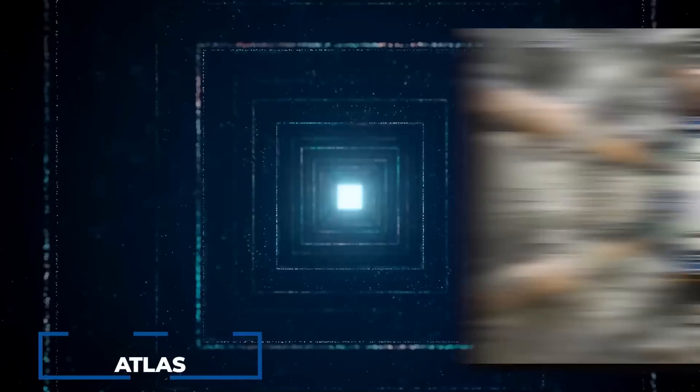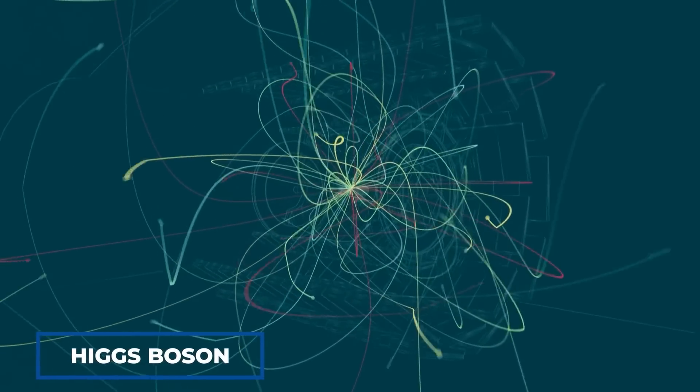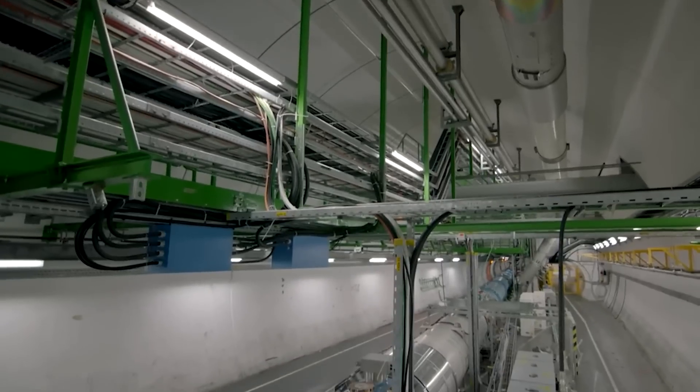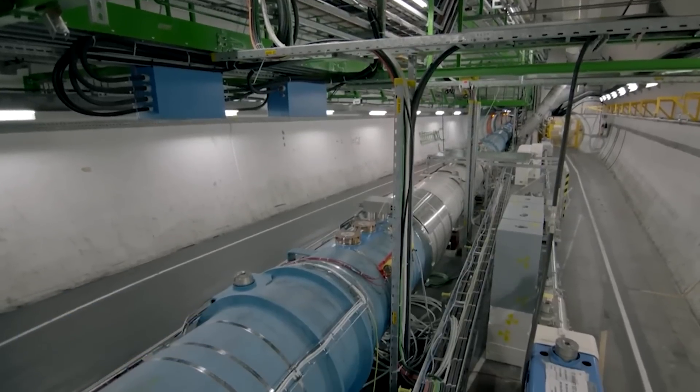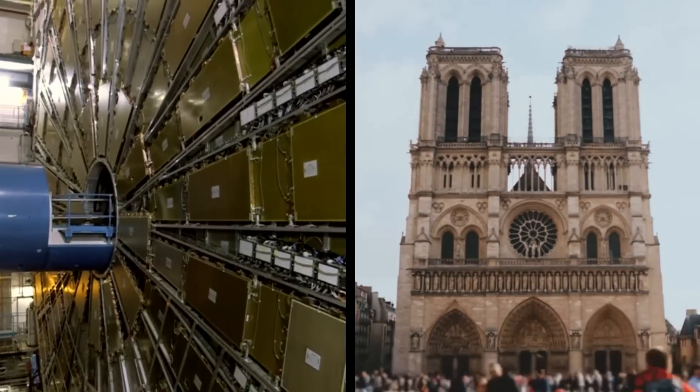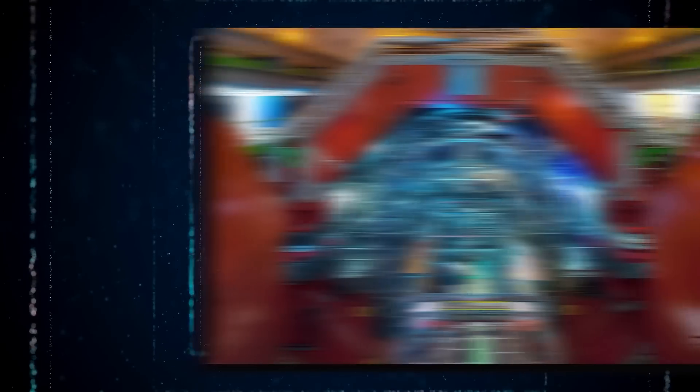One of these detectors is Atlas, which played a key role in discovering the Higgs boson. With dimensions of approximately 148 feet by 82 feet, 45 meters by 25 meters, Atlas is about half the size of Notre Dame and twice the weight of the Eiffel Tower.